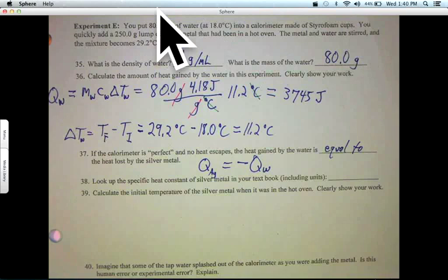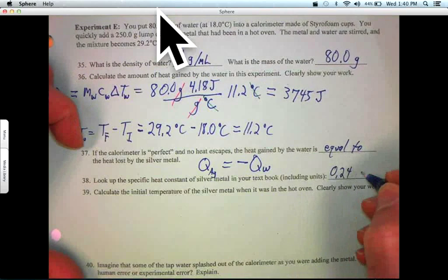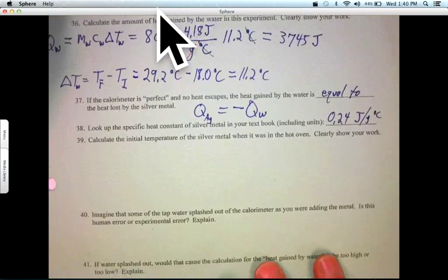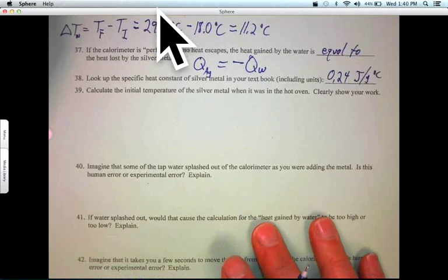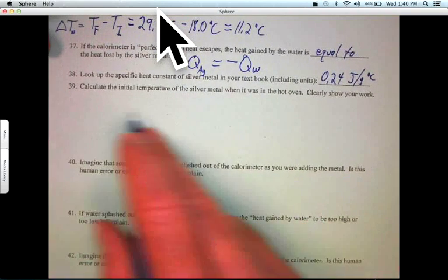Okay. So let's write that, 0.24 joules per gram degree C. Calculate the initial temperature of the silver metal. All right.